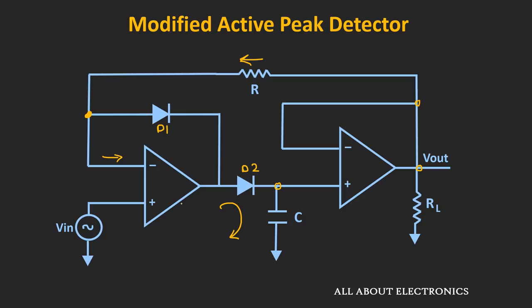Now let's see the second case, whenever the input voltage goes below the peak voltage. At that time, diode D2 will become reverse biased and the outer loop of this circuit will get broken. The negative input terminal of this op-amp will be at peak voltage, while the positive input terminal is slightly less than the peak voltage. So momentarily, the output of the op-amp will become negative, and because of that, diode D1 will become forward biased and it provides feedback to this op-amp circuit. That prevents this op-amp from going into negative saturation. Whatever voltage which is applied at the input terminal, the same voltage will appear at the output terminal. In this way, the op-amp is not going into negative saturation, and at the same time, as diode D2 is non-conducting, it prevents the capacitor from discharging. In this way, this circuit will be able to respond to fast signals.